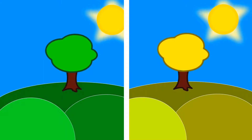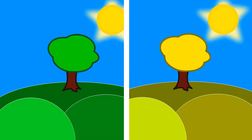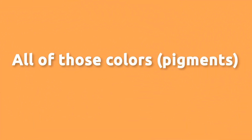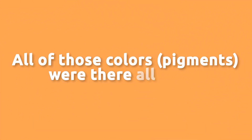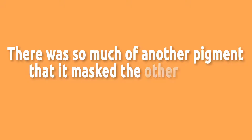Why do leaves turn yellow, orange, and other pretty colors in the fall before they fall off the trees? Well, all of those colors or pigments were there all along, but there was so much of another pigment present that it masked the other colors.